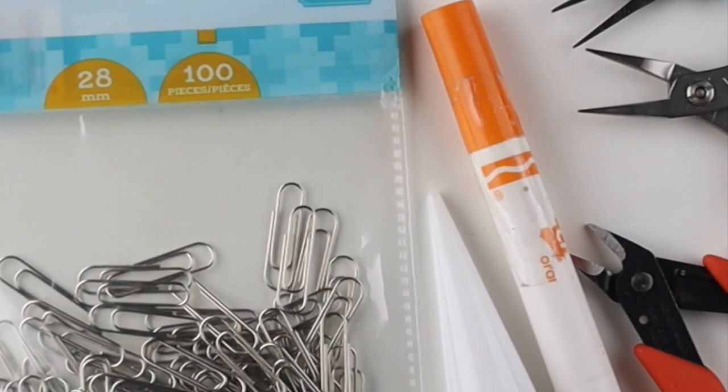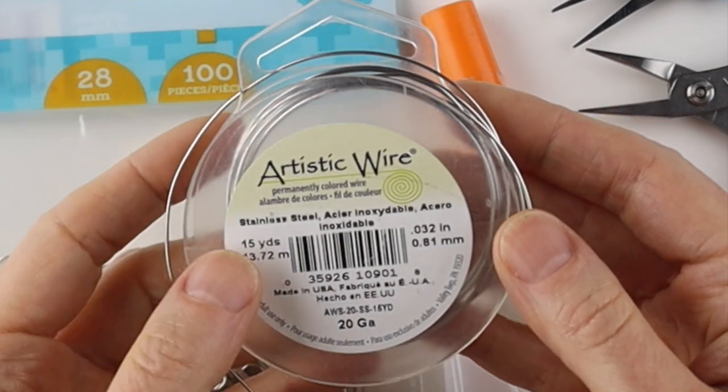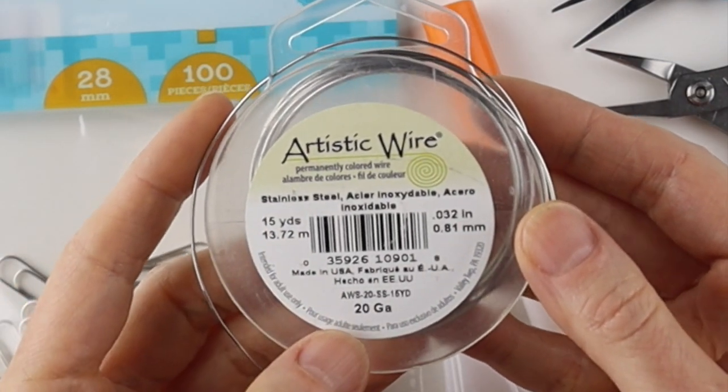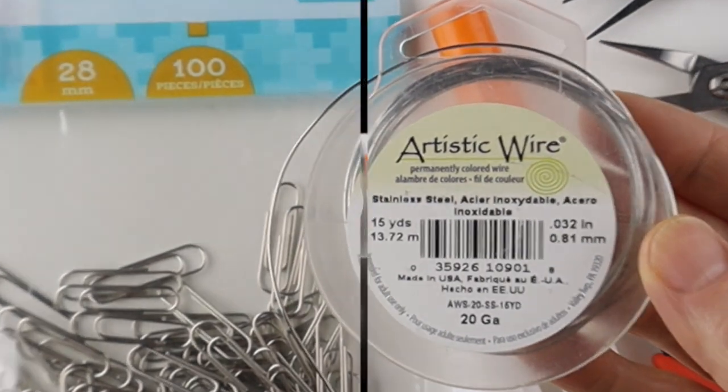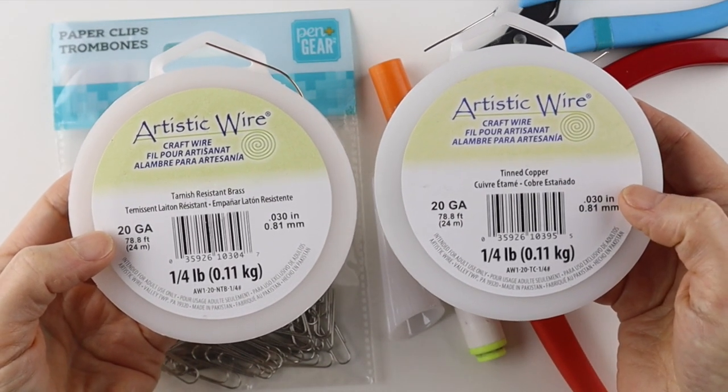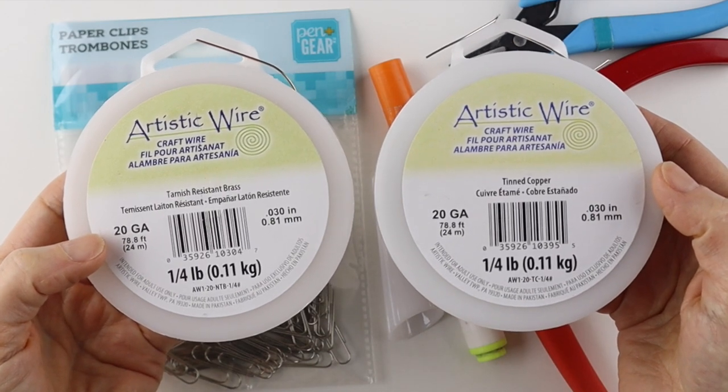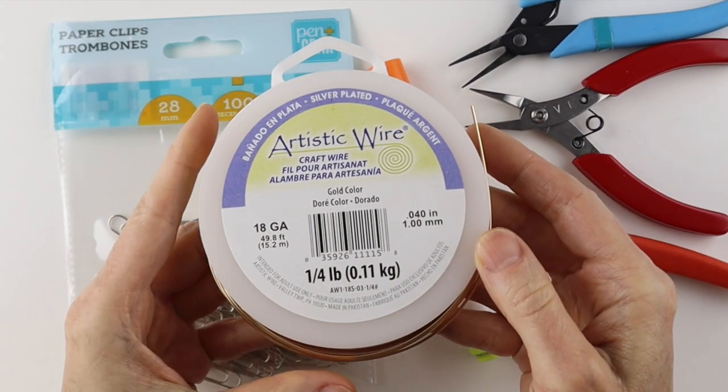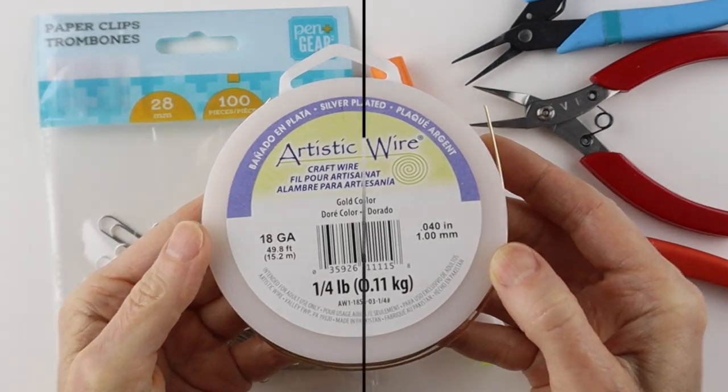If you don't have paperclips, the best thing to use is stainless steel wire. This is 20 gauge. It's quite stiff, just like the paperclips. You can use 20 gauge tarnish resistant brass, tinned copper, or any half hard wire. And if you only have a softer wire, use a little thicker, like 18 gauge.